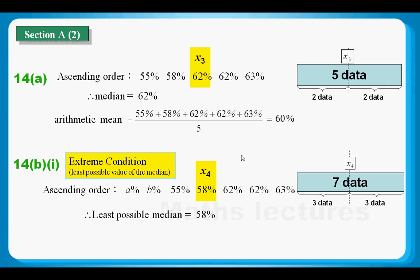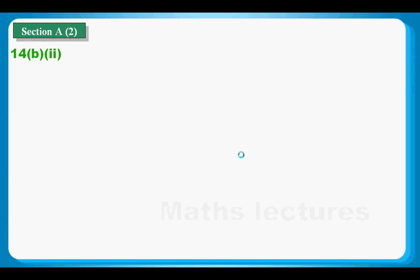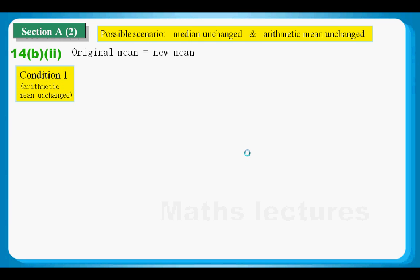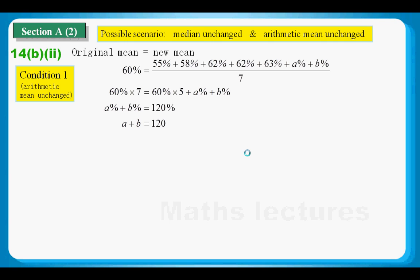What about in the scenario 2 for part 2? Now one of the possible scenarios would be the median unchanged and arithmetic unchanged. Let's deal with the arithmetic mean first. Again, we using the same kinds of knowledge to deal with it.